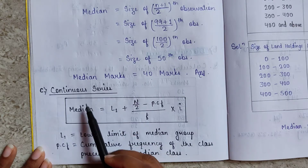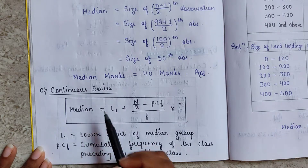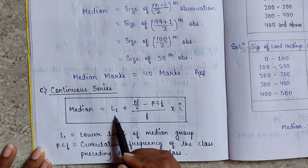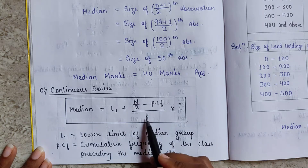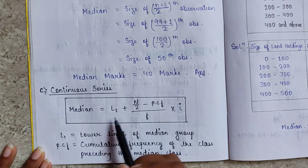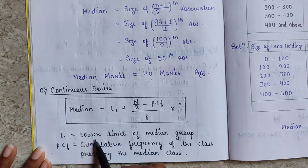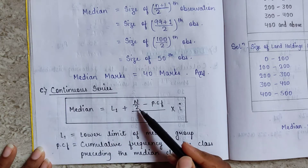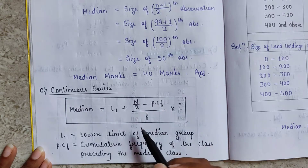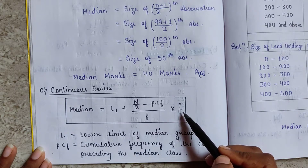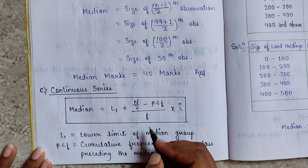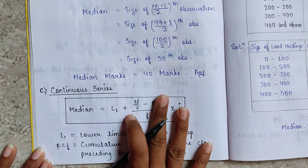Now for the continuous series, the formula for median is: Median = L1 + [(N/2 − PCF) / F] × I, where L1 denotes the lower limit of the median group, PCF is the previous cumulative frequency (the cumulative frequency of the class preceding the median class), F is the frequency, and I is the class interval or class size.